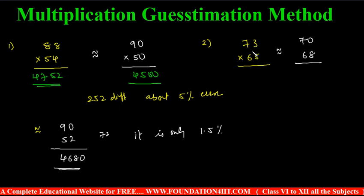73 nearest to tens is 70, so minus 3. Same plus 3 you can do. If you do multiplication, 73 into 65, the original number is 4745.